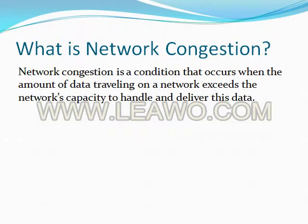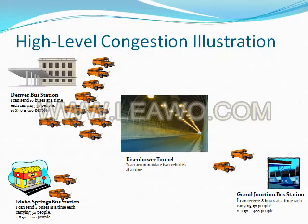Network congestion is a condition that occurs when the amount of data traveling on a network exceeds the network's capacity to handle and deliver that data. If you live in Colorado or have visited the mountain areas along I-70, you've most likely experienced a form of congestion known as traffic. We'll use this example to illustrate congestion at a high level — you can relate the bus stations to hosts and the buses to segments.